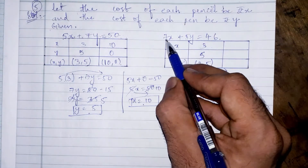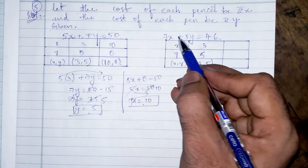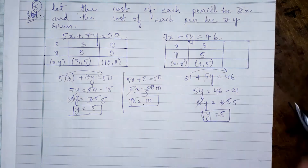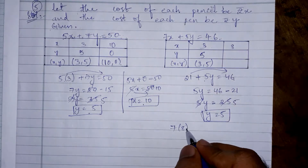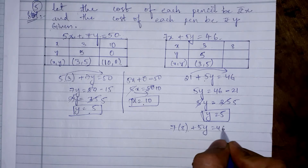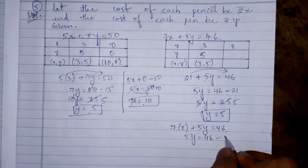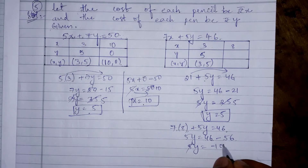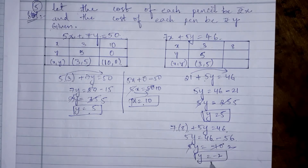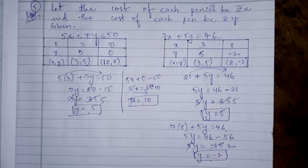For the next value, we look for a number in the 7 times table that ends in 6. Taking x = 8, we get 7 × 8 = 56, so 5y = 46 − 56 = −10, giving y = −2. So the second point is (8, −2).